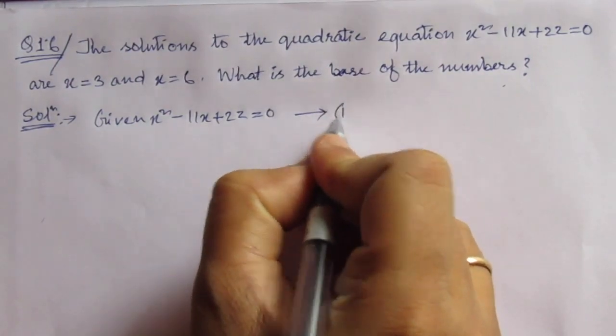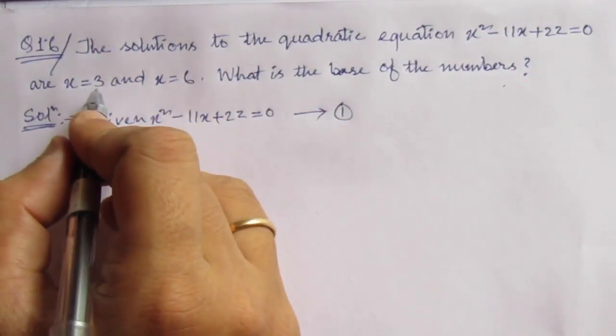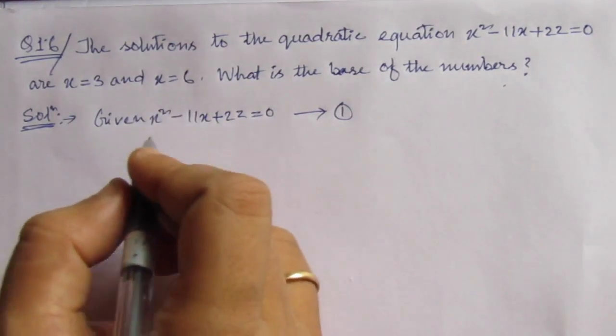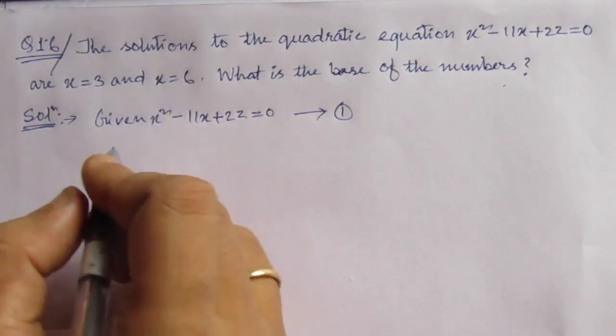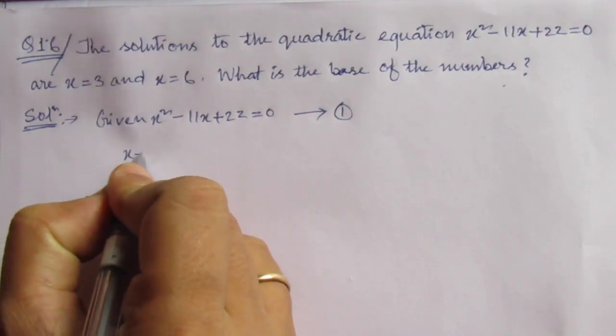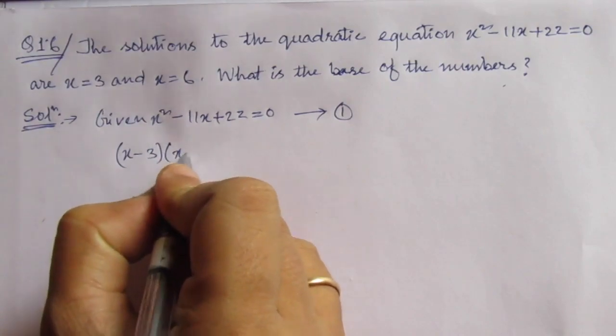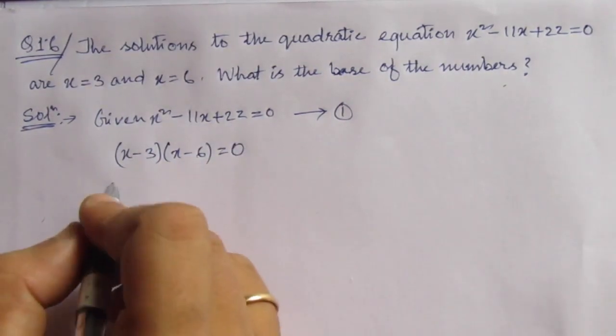This is equation number 1. We are given that x equal to 3 and x equal to 6, these are the roots. So let us write that if these are the roots, then this equation will be fulfilled: x minus 3 into x minus 6 equal to 0.